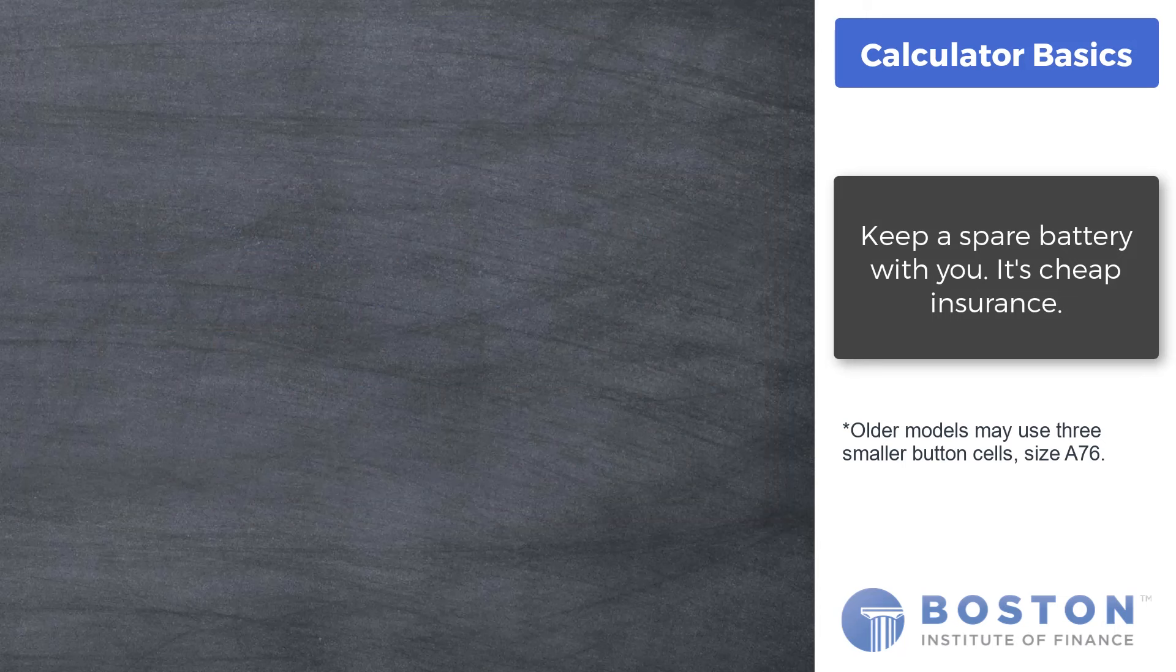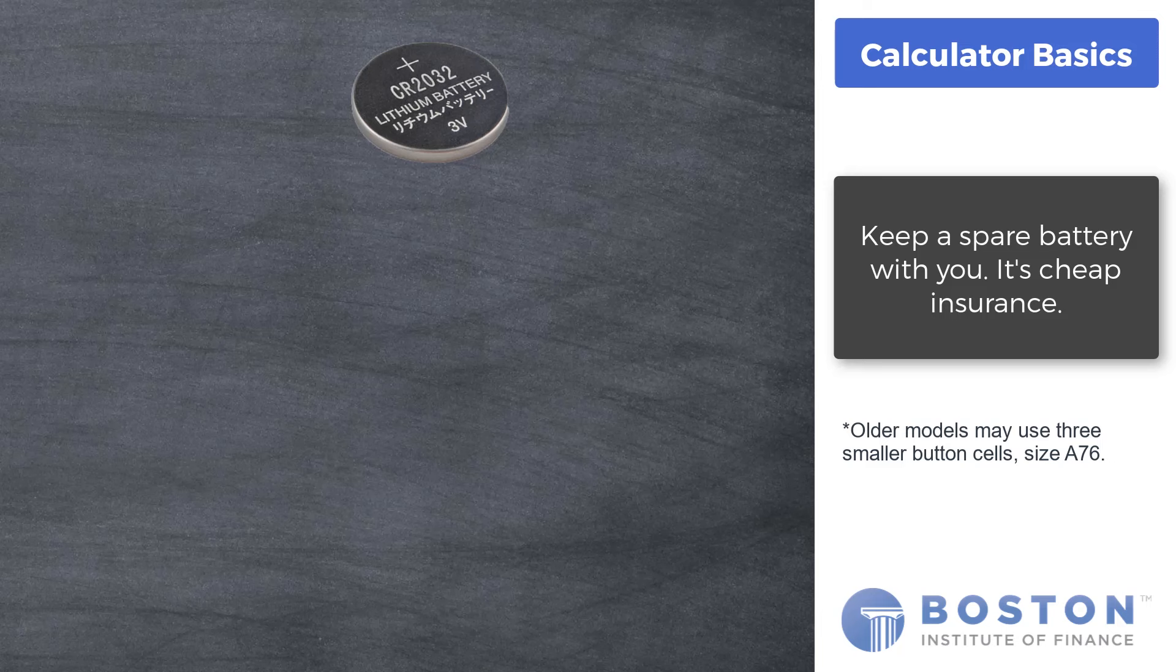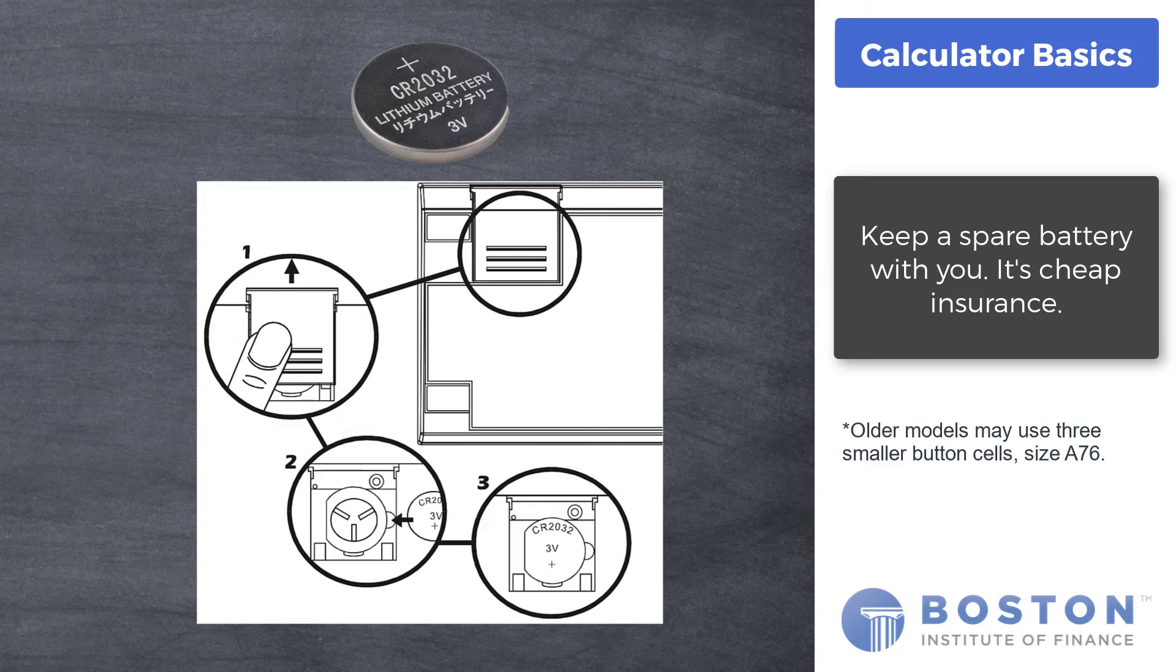Last basic item to cover: the battery. Do not be caught without a fresh battery in a high stakes exam. The HP 12C models manufactured since 2015 use a single lithium battery cell size CR2032. It can be easily removed and replaced without tools by sliding up the battery cover, lifting out the cell, and inserting a new cell with the plus side up.